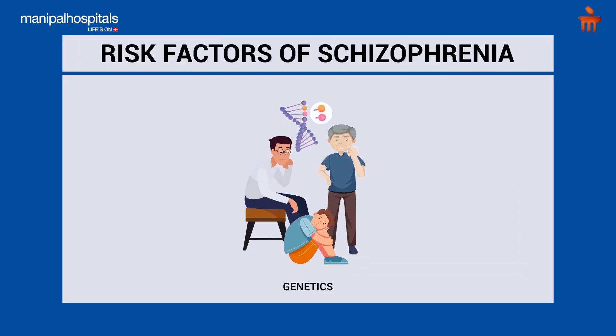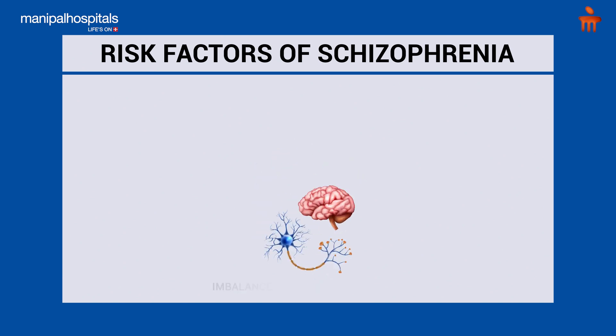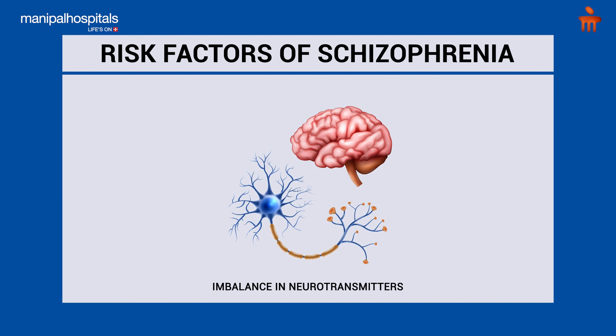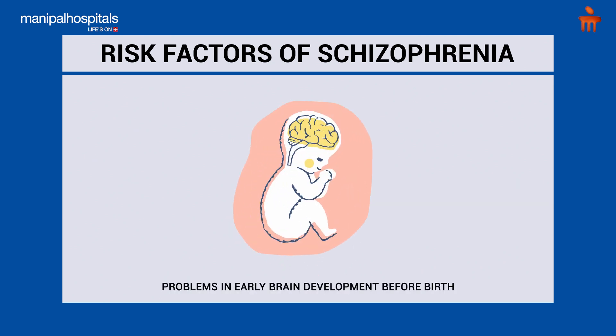There are many causes of Schizophrenia. Firstly, genetics play a very important role in Schizophrenia — it is seen in families. Second, studies have shown that there is an imbalance between neurotransmitters which can cause Schizophrenia. Thirdly, problems in the development of the brain before the birth of a child is one of the causative factors of Schizophrenia.